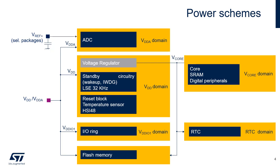VDD-A voltage is the same as VDD and supplies the analog peripherals. The VREF+ pin provides the reference voltage to the analog-to-digital converter and can be used as an external buffer reference for the application. Note that the flash is connected to two power rails: VDD for the memory and VCore for the controller.